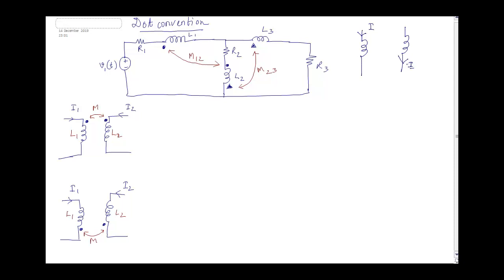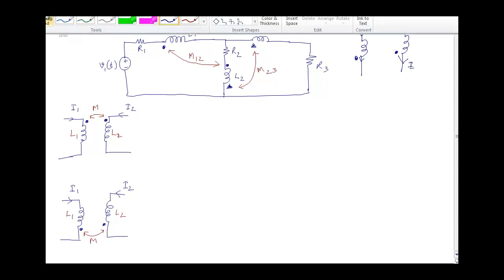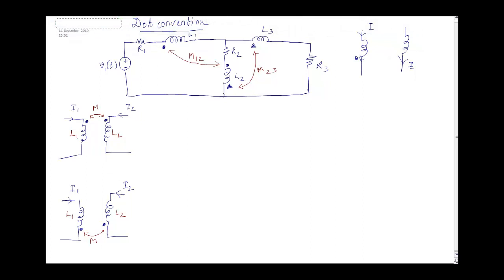We cannot say just by looking at the inductor whether a current is entering or leaving. But when we show a dot, we can clearly tell. If you are standing at the dot, the current is going to come out from the inductor from where you are standing — so at the dot, the current is leaving the inductor. If the dot is drawn at the other end, then the current is entering at that dot.